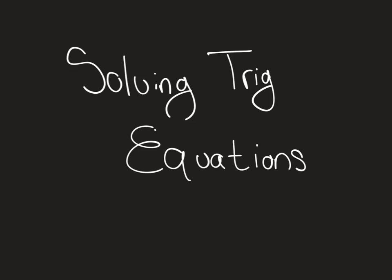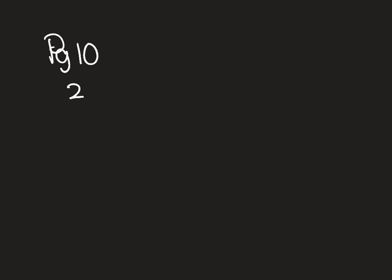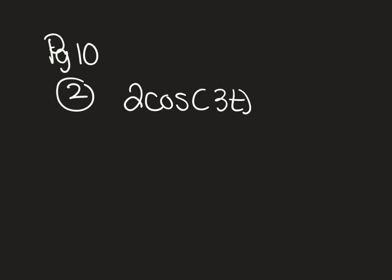This video covers common questions about solving trig equations. Starting on page 10, number 2: solve 2 cosine of 3t minus 1 equals 0 on the interval from 0 to 2π.